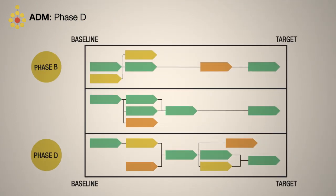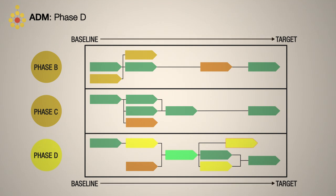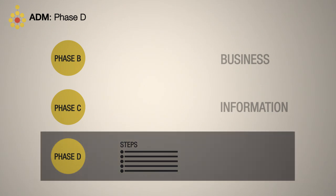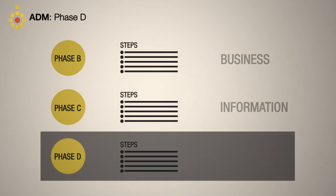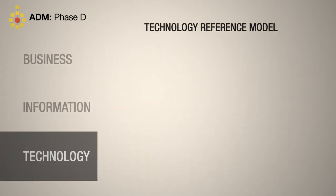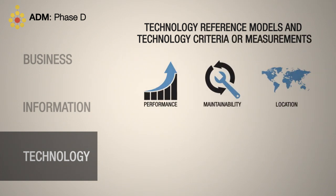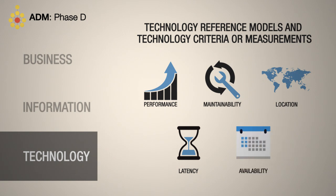As with the other architecture development phases, Phase D identifies candidate architecture roadmap components to make the transition from baseline to target. The steps in Phase D are almost identical to the steps in phases B and C. The main difference is that the focus is now on technology. This includes technology reference models and technology criteria or measurements such as performance, maintainability, location, and latency or availability.